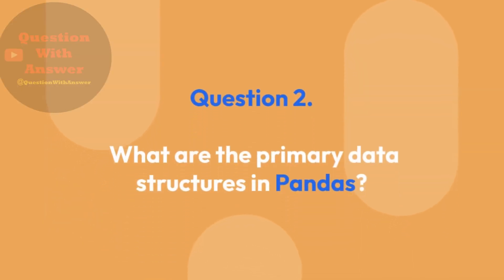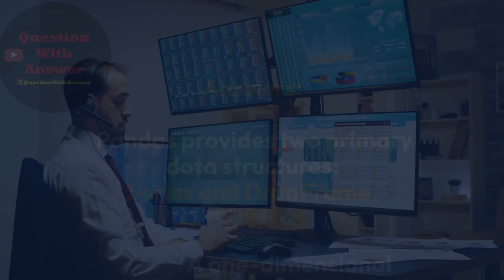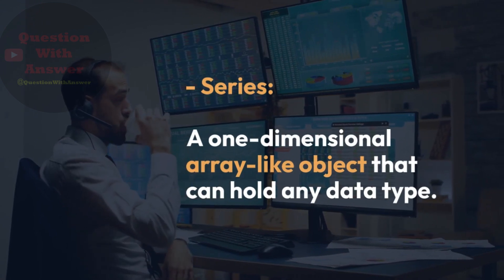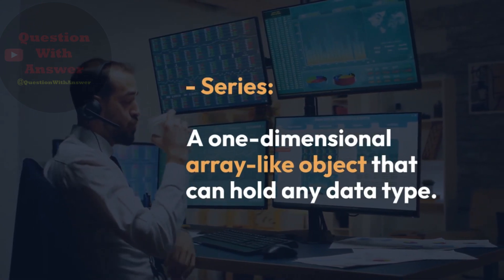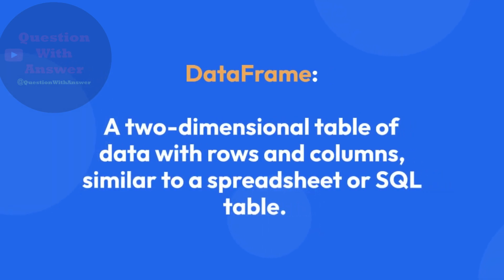Question 2: What are the primary data structures in Pandas? Pandas provides two primary data structures: Series and DataFrame. Series is a one-dimensional array-like object that can hold any data type. DataFrame is a two-dimensional table of data with rows and columns, similar to a spreadsheet or SQL table.